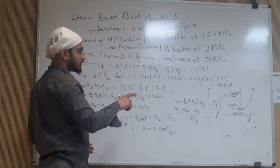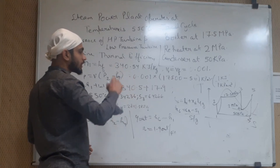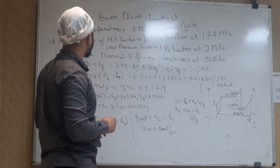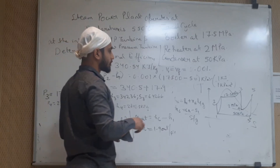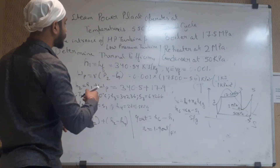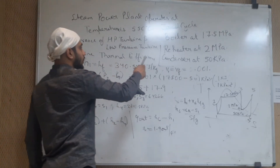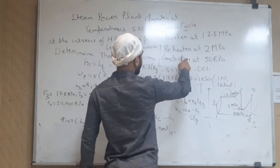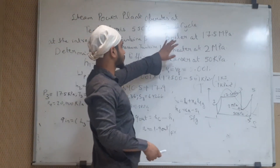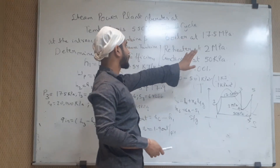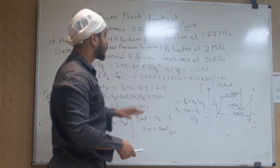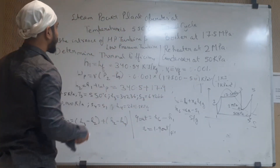So the pressures are given at points 1, 6, 4, 5, 2, and 3. The steam power plant has 3 sections: boiler, heater, and condenser. The 3 pressure values correspond to processes 6 to 5, 4 to 5, and 2 to 3.